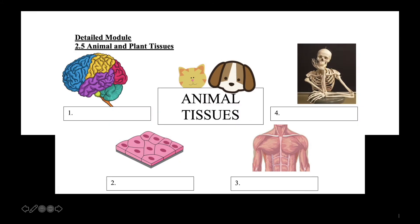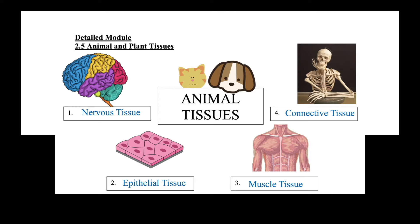Let's begin by learning about animal tissues first. There are four types of animal tissues: the nervous tissue, the epithelial tissue, the muscle tissue, and lastly the connective tissue.